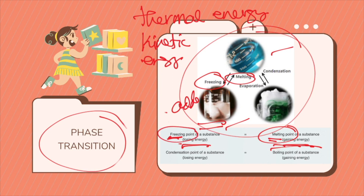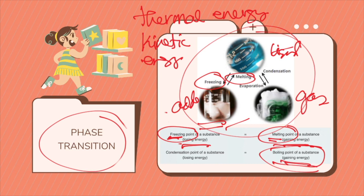The temperature at which a given substance transforms from liquid into a solid is the freezing point, which is the same temperature as the substance's melting point. The next transition is boiling, also called evaporation. Boiling is the process of a liquid transforming into gas when heat is added, meaning it gains energy. As heat is added, the particles in the liquid have greater kinetic energy to escape the liquid phase and become a gas. The temperature at which a liquid boils, changing from liquid into gas, is the boiling point.